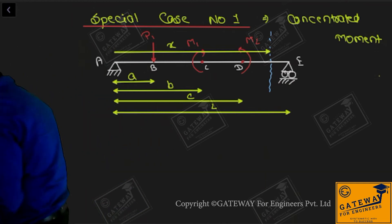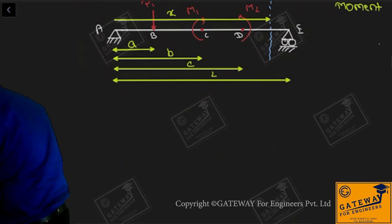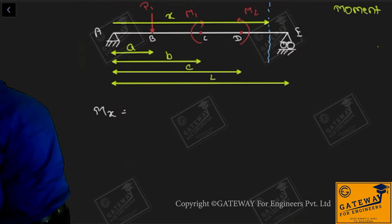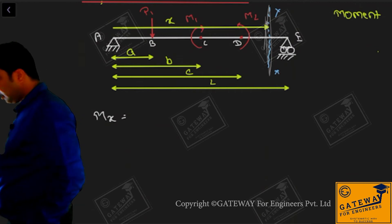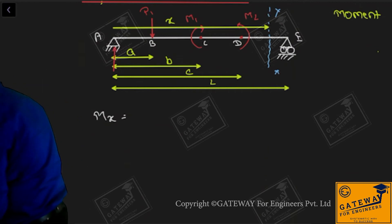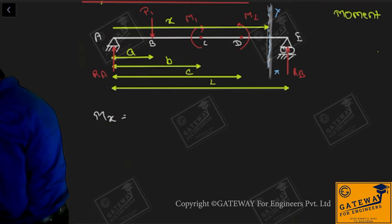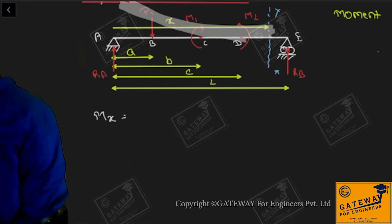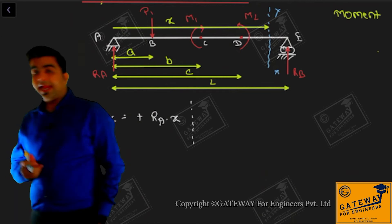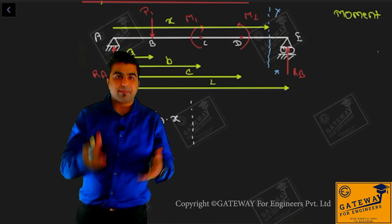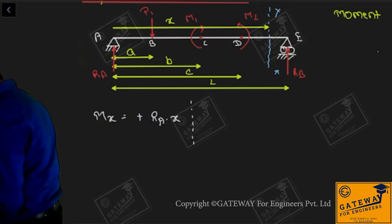Now, how do we deal with the moment? I am writing the more generalized equation for bending moment. Mx equals - about this x-x section I need to write the moment equation. Here reaction Ra will act, and reaction Rb will act. Due to Ra, it will bend in sagging, so the first term is plus Ra into x. Then vertical load terms follow: the next term may or may not be applicable.